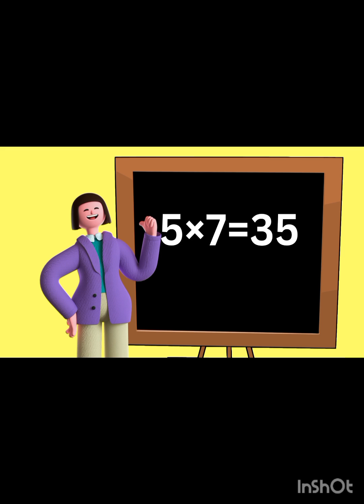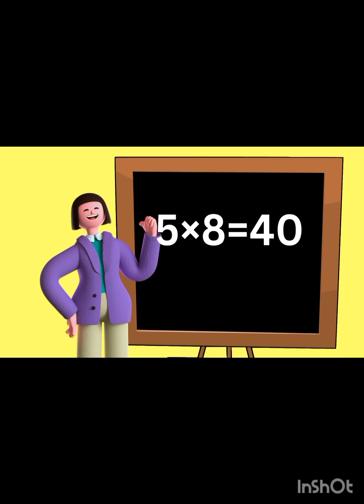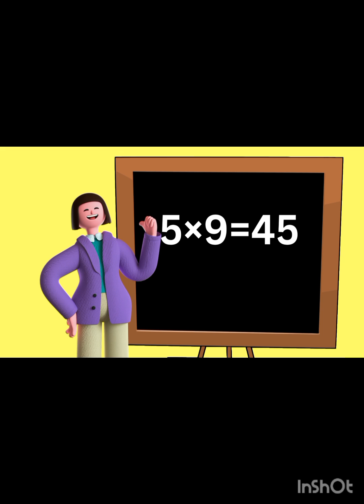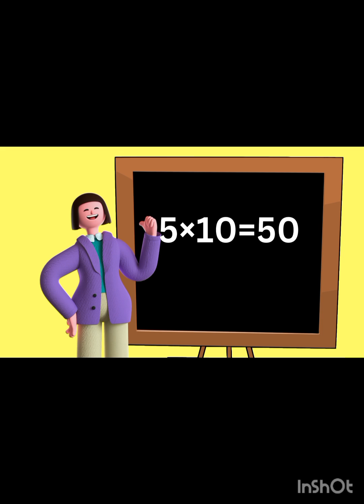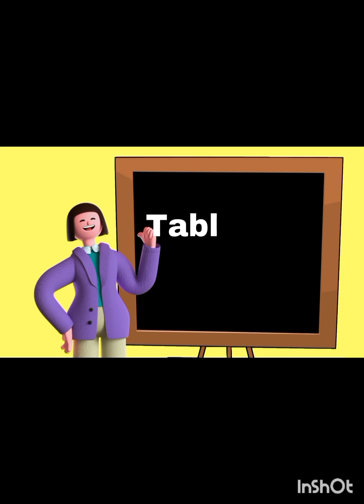Five sevens are 35. Five eights are 40. Five eights are 40. Five nines are 45. Five nines are 45. Five tens are 50. Five tens are 50. So friends, I hope you have learned with me — the table of five is so easy!